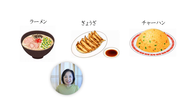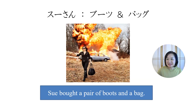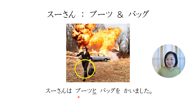Let's go to a Chinese restaurant and order some items. ラーメンと、餃子と、チャーハンをください。 Another example: スーさんはブーツとバッグを買いました。